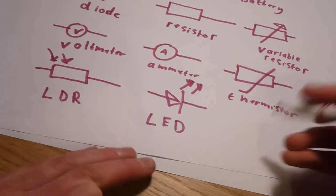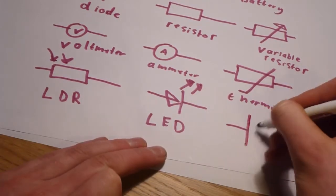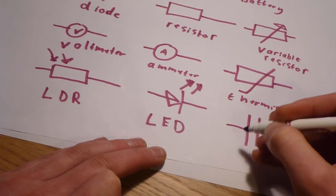Finally, we have a capacitor, which is drawn very similar to a cell, but both lines are the same length.